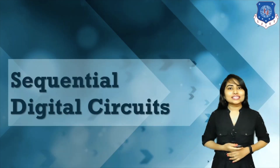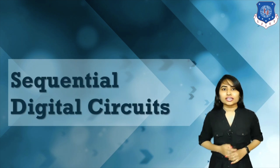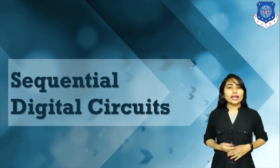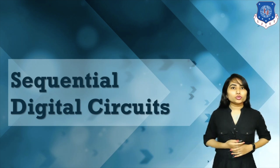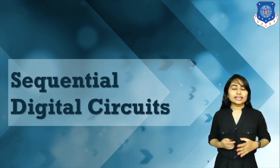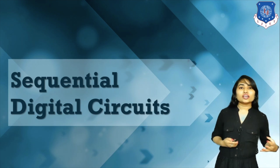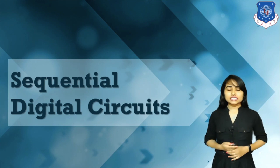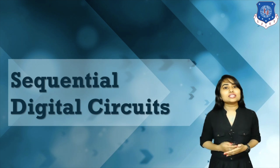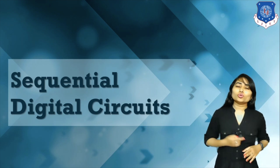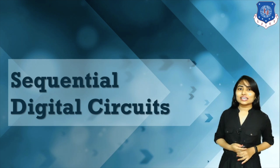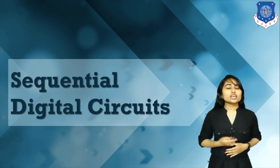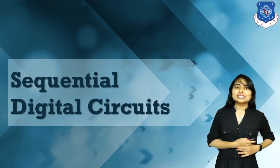We also have sequential digital circuits. A combinational digital circuit simply processes data and gives output according to the input. But in a sequential logic circuit, there is a circuit which stores past data. So sequential digital circuits are used for storing and analyzing purposes. We have to learn about sequential digital circuits to understand how the processor can store and process our data.